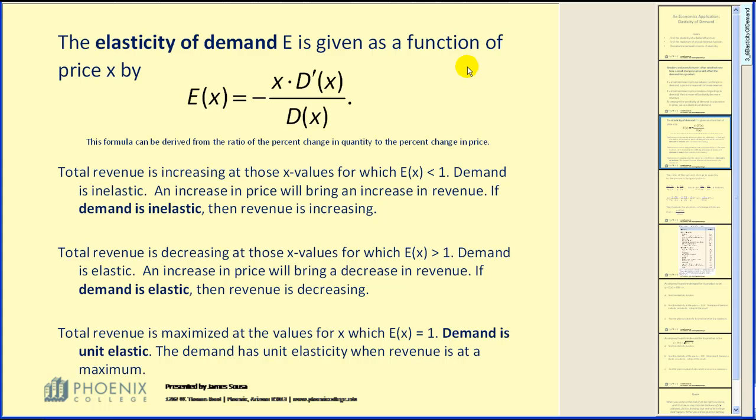The elasticity of demand E is given as a function of price x by E(x) equals negative x times the derivative of the demand function divided by the demand function. This formula can be derived from the ratio of the percent change in quantity to the percent change in price, which I will show on the next slide.